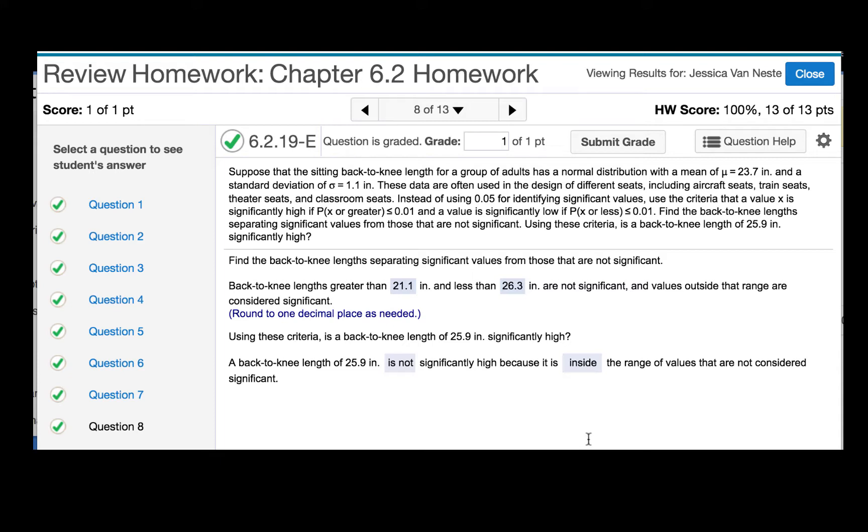Suppose that the sitting back-to-knee length for a group of adults has a normal distribution with a mean of mu equal to 23.7 inches and a standard deviation of sigma equal to 1.1 inches.